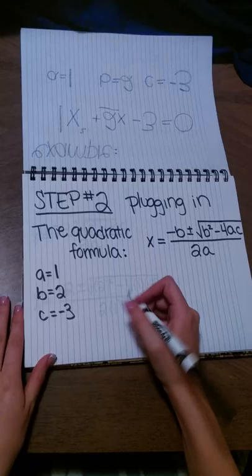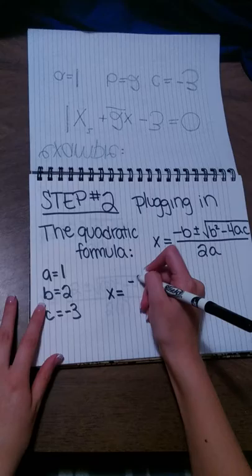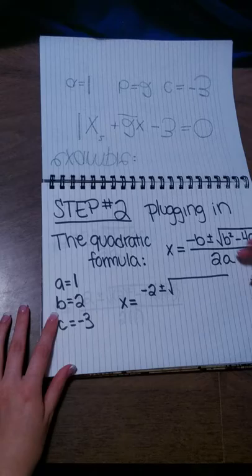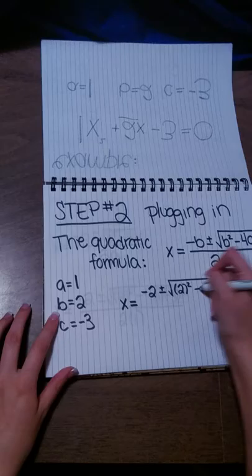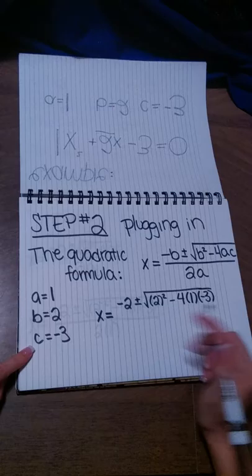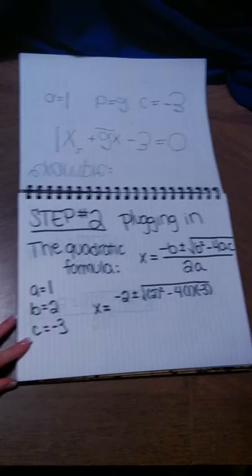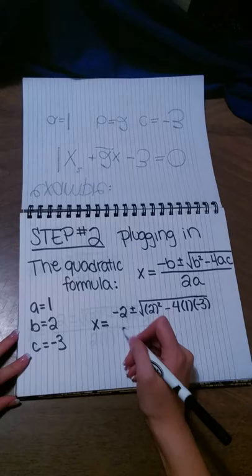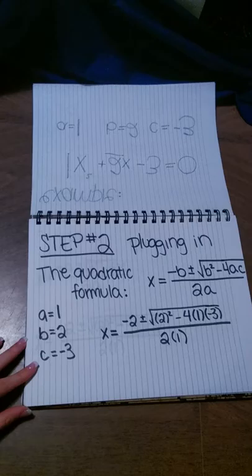Now we go through and plug this in. X equals negative b, so we have negative 2, plus or minus the square root of b squared, so that would be 2 squared, minus 4 times a which is 1, and then times c which is negative 3. Make sure you're getting all of this under the square root sign, because sometimes people mess up and only get the b squared or only part of it. So it's really important to make sure all of that is under the square root. And then all of this over our 2a, which would be 2 times 1.